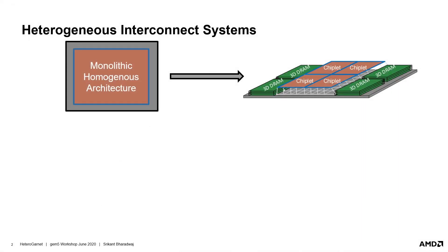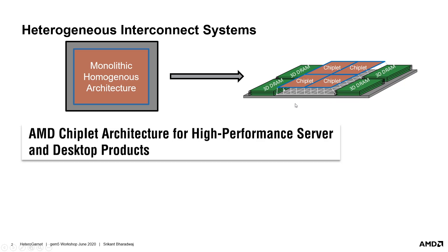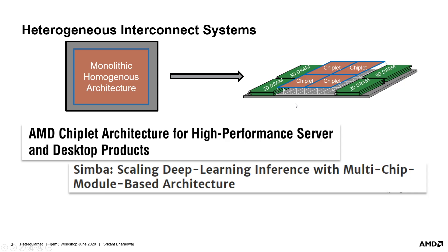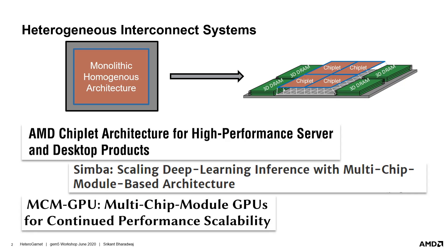Heterogeneity in modern systems is growing by the day. Take the example of recent advances in die stacking and 2.5D chip integration technologies. These introduce in-package network heterogeneities that complicate the interconnect design. Some of these are already available commercially and advanced studies are being pursued in the academic and industrial research community. Even a simple 2.5D processor architecture which includes multiple chiplets with memory controllers could bring in many forms of heterogeneity.